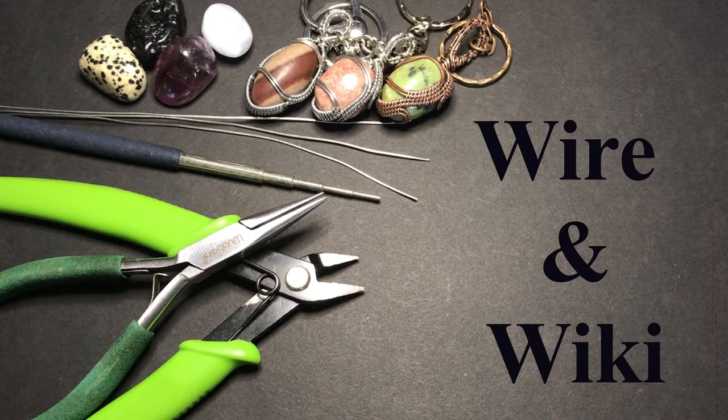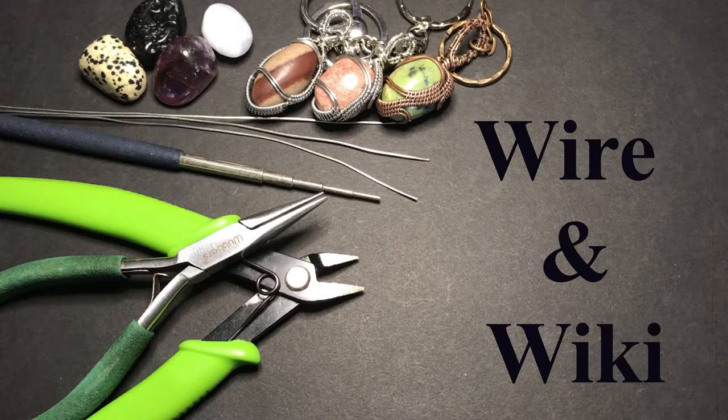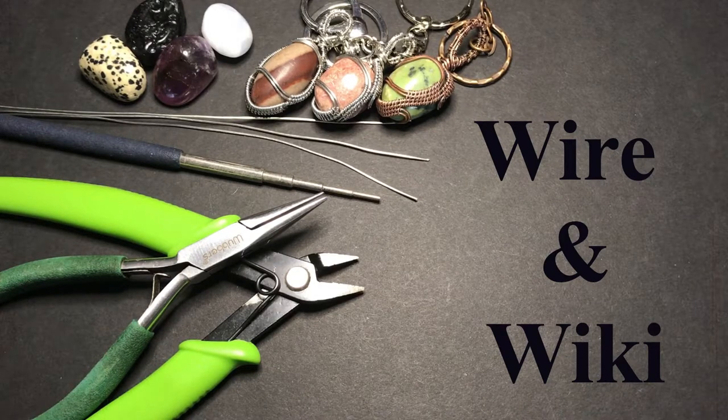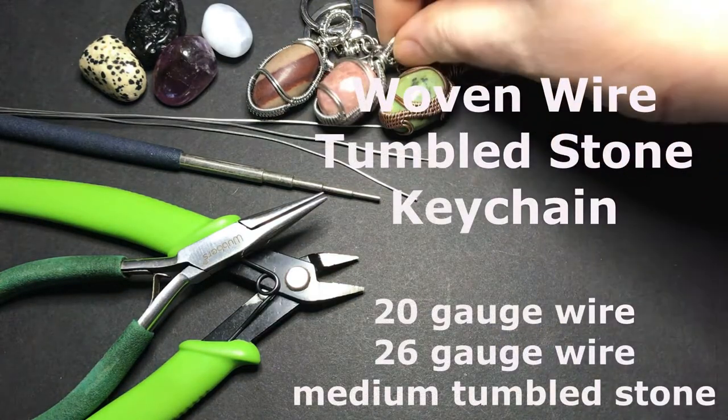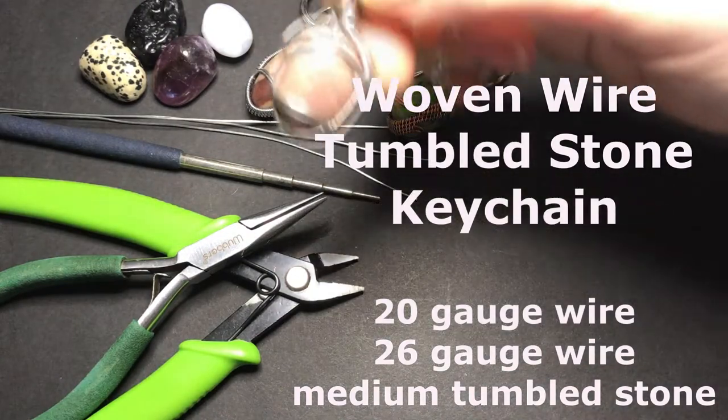Hi everyone, welcome to Wire and Wiki. Today we're going to be making a woven wire wrapped tumblestone keychain while we talk about cultural depictions of cats from a Wikipedia article.